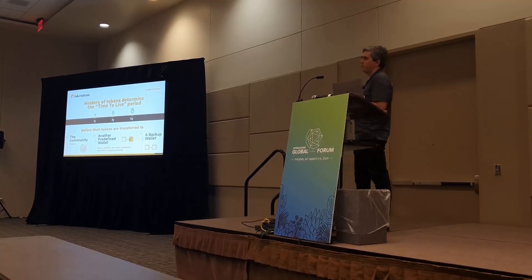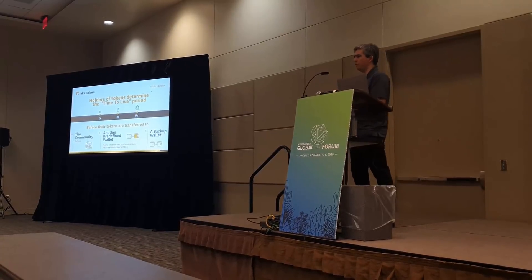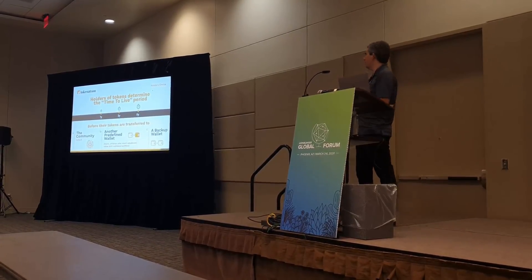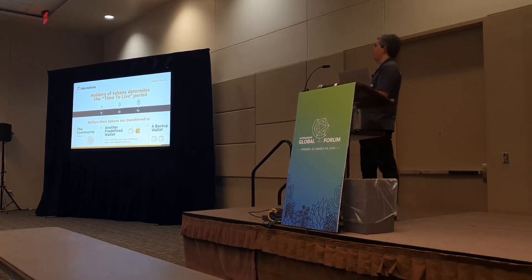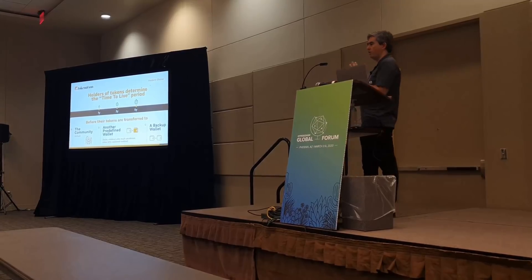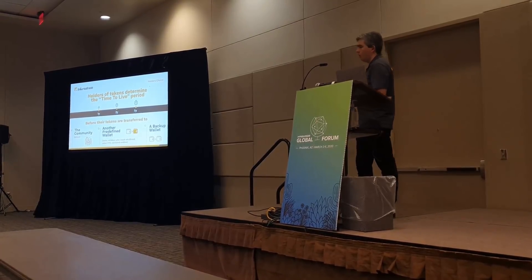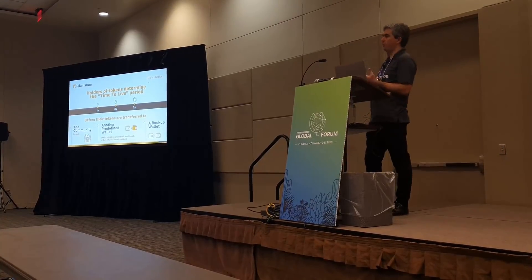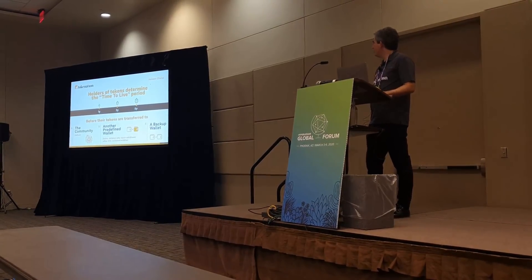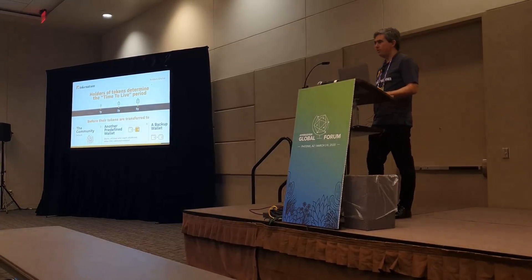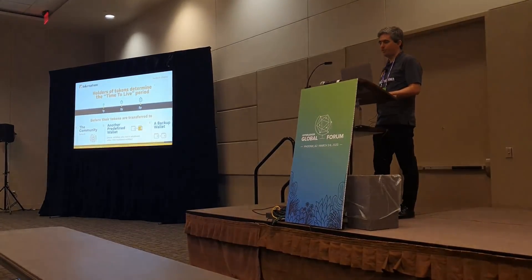One small example that's central to the platform: we are able to recover tokens in case of loss of private keys, or if the holder decides those tokens belong to someone who is underage and should receive them upon adulthood. We have mechanisms that will send those tokens after a preset period of time defined by the holder — one, three, or five years. After that time elapses, if those assets are not touched or moved, they will be distributed by default to the community, or to another predefined wallet according to a KYC process. This relatively simple implementation is innovative enough; we haven't found many who have done it before.